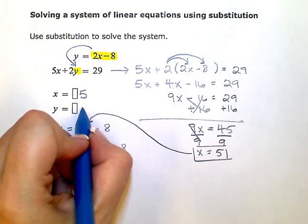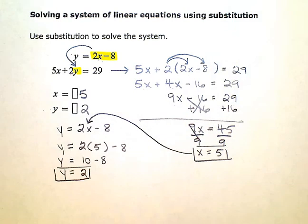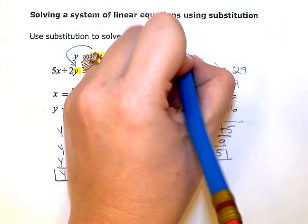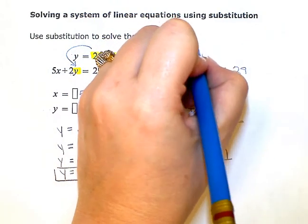So my solution is x equals 5, y equals 2. As an ordered pair, the solution would be 5 comma 2.